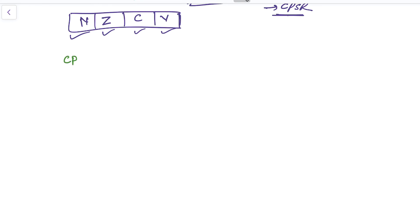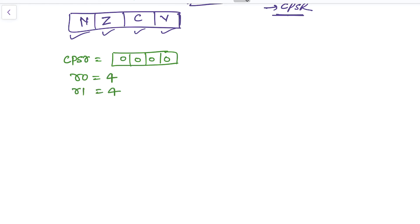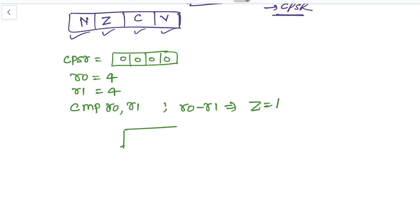Let's understand this with an example. We have a CPSR with upper four values initialized to 0 0 0 0, representing N Z C V. If R0 equals 4 and R1 equals 4, and we do CMP R0 and R1, the result will be R0 minus R1, which equals zero. This automatically raises the Zero flag to 1, so the CPSR upper four bits will be updated to 0 1 0 0, corresponding to Z.